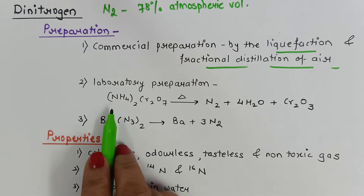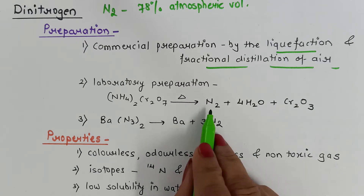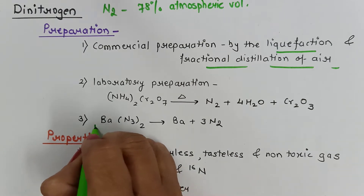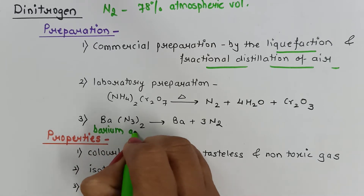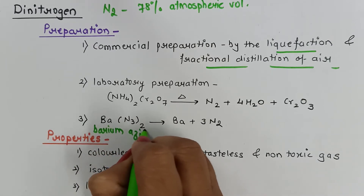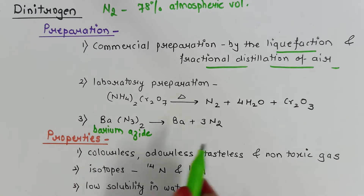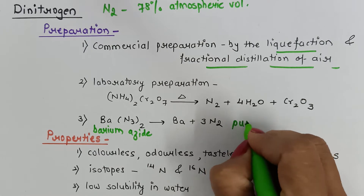The first lab method is the heating or thermal decomposition of ammonium dichromate, where nitrogen gas is obtained. We can also carry out the thermal decomposition of barium azide, which will give us nitrogen. This is a method of obtaining pure nitrogen in the laboratory.